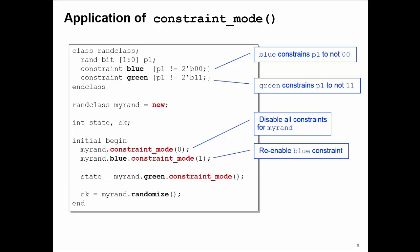I can test the value of the constraint mode switch. Here I use the function form of constraint_mode to read the value of the green constraint mode switch, and this will return 0 because it's currently turned off.